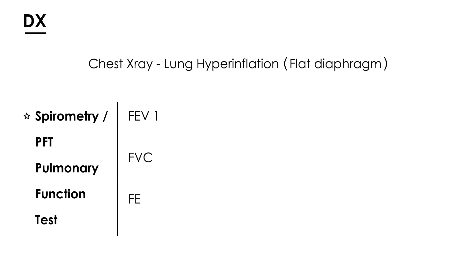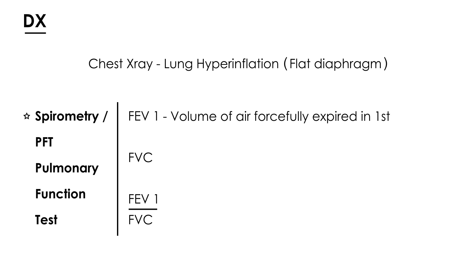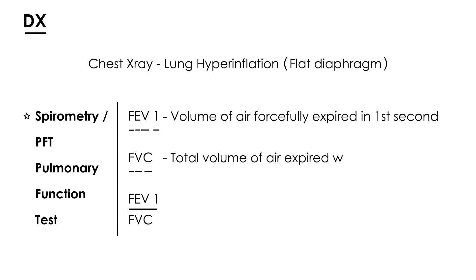The key PFT metrics are FEV1, FVC, and their ratio. FEV1 is the forced expiratory volume in one second — the volume of air forcefully expired in the first second of exhalation. FVC, or forced vital capacity, is the total volume of air expired with maximum force. In COPD, FEV1 is decreased — how much depends on severity — and the FEV1/FVC ratio is also decreased, below 0.7.